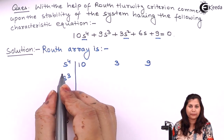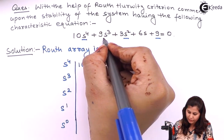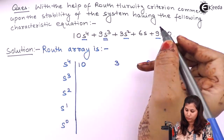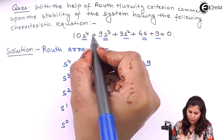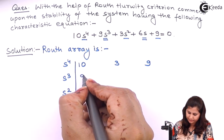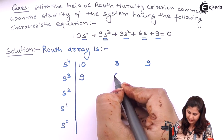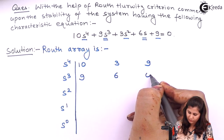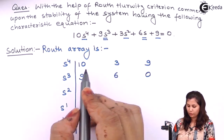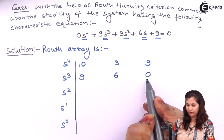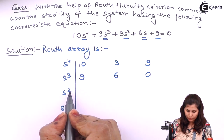Next we have the s^3 row with the odd terms. We write the coefficients of s^3 and s^1. The s^3 coefficient is 9 and the s^1 coefficient is 6. Below s^0 we write 0 to complete the array, since there is no additional coefficient there.